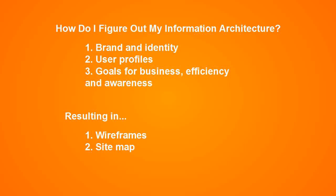These things result in, number one, wireframes. Wireframing is a basic way of displaying the different pages of your website in a black and white manner — it shows where different elements of each web page are going. I'll make a video later that goes deeper into this. Number two, a sitemap. A sitemap shows which pages are going on your website, the order they are in, the general structure of your website, how many pages there are, and how many choices people should have from the main menu.